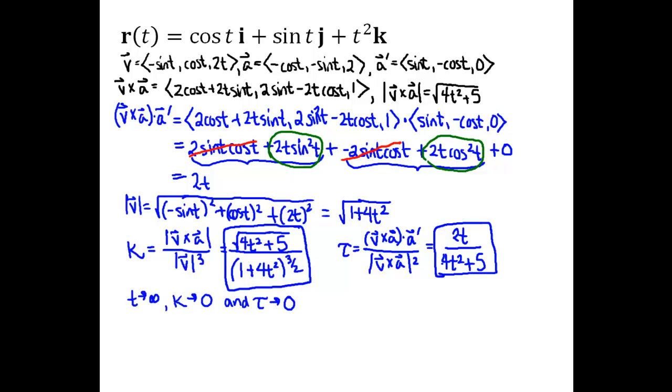So what that means is that as we go farther and farther out on the curve, the curve becomes more and more like a straight line with zero bend and zero twist to the motion, or nearly zero bend and nearly zero twist anyway. Those values are approaching zero.